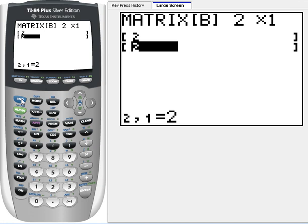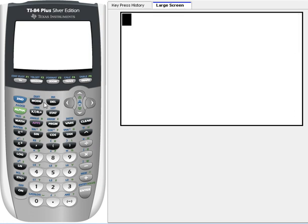Now we want to quit out, so press second mode. The blue word says quit. Remember, the x matrix, which is our variables, is just A inverse B. We find that by doing A inverse B.